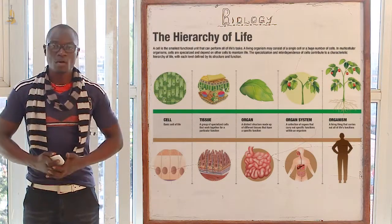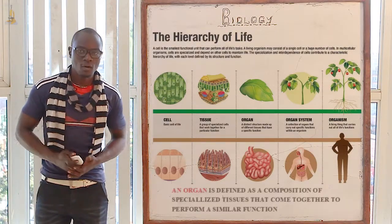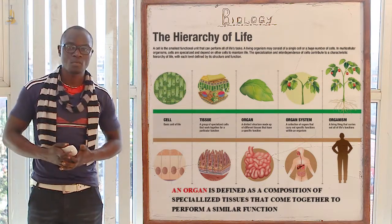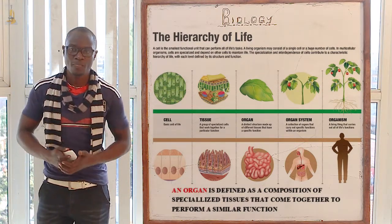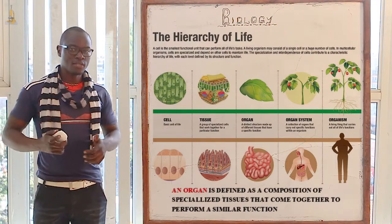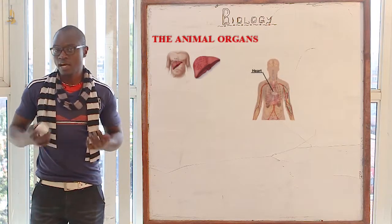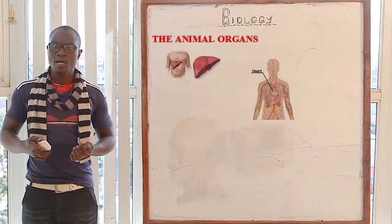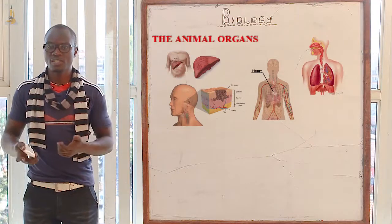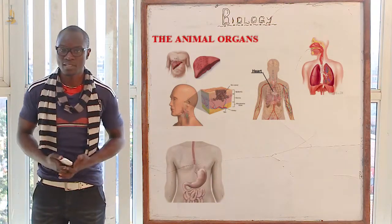Now let's look at an organ. An organ is many tissues that have come together to perform a specific function. Let's look at the organs in animals: we have the liver, the heart, the skin, the lungs for gaseous exchange, and the stomach for digestion of substances.